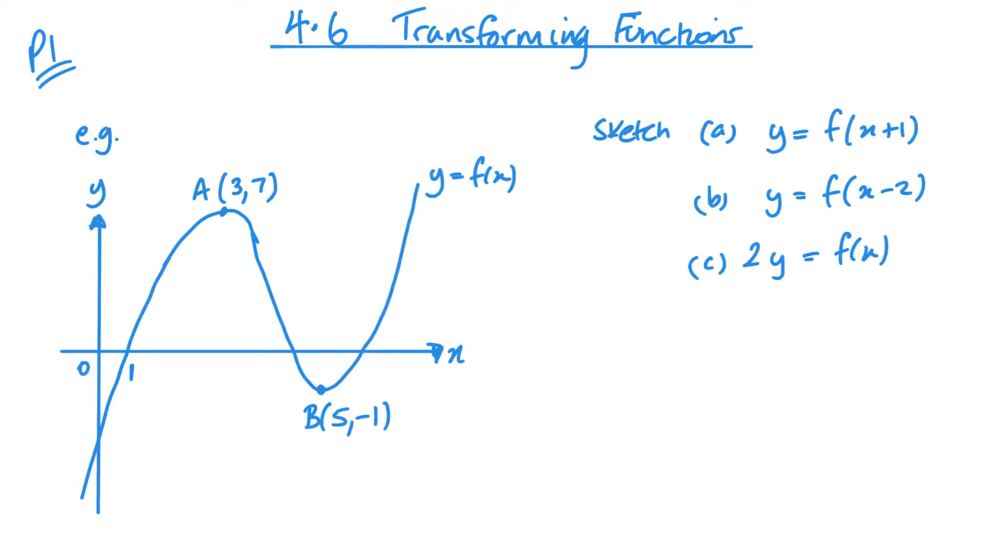So first example is about sketching. We've got a graph, we don't know what f of x is but we're given the two points A and B and we're given one of the points where it crosses the axes. So the first one, sketch y equals f of x plus 1. Inside the brackets means it's horizontal, plus 1 we do the opposite so we want to move one space to the left or one unit left.